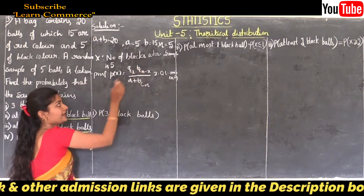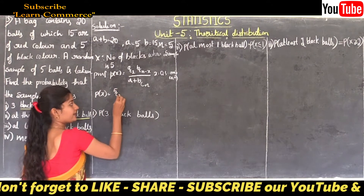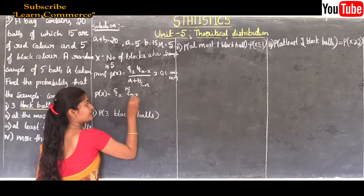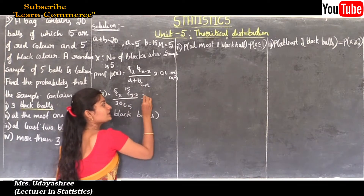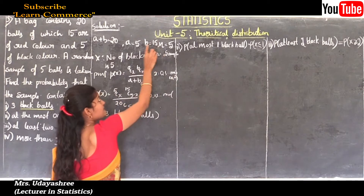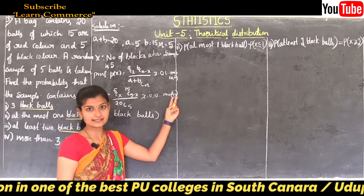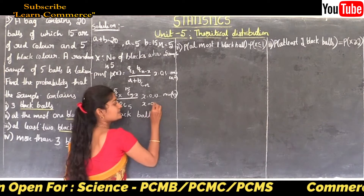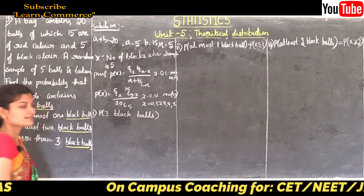Substituting the values a=5, b=15, and n=5 into the formula: P(X=x) = [5Cx × 15C(5−x)] / 20C5. Since a=5 and n=5, the minimum is 5, so x ranges from 0 to 5: that is x = 0, 1, 2, 3, 4, 5.